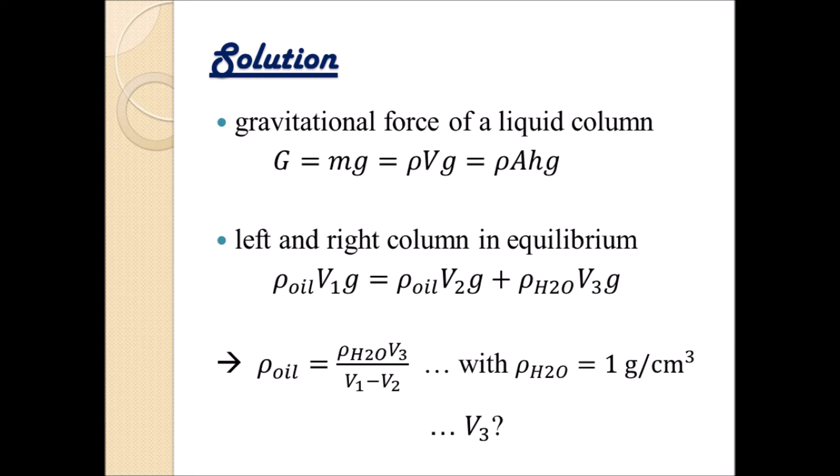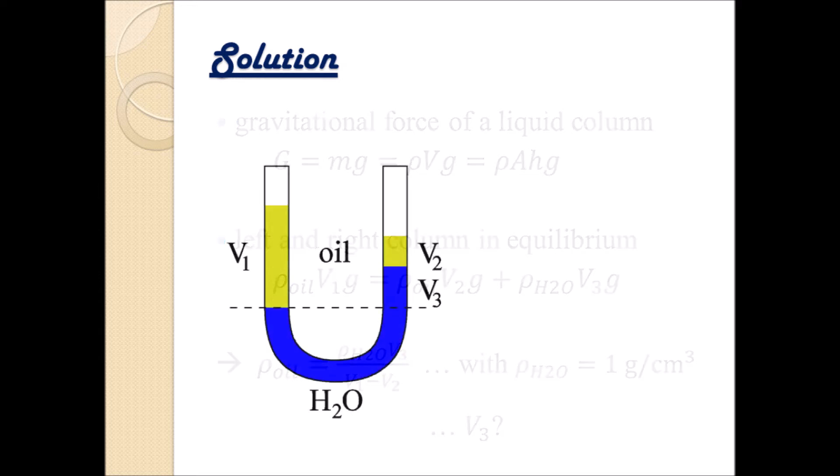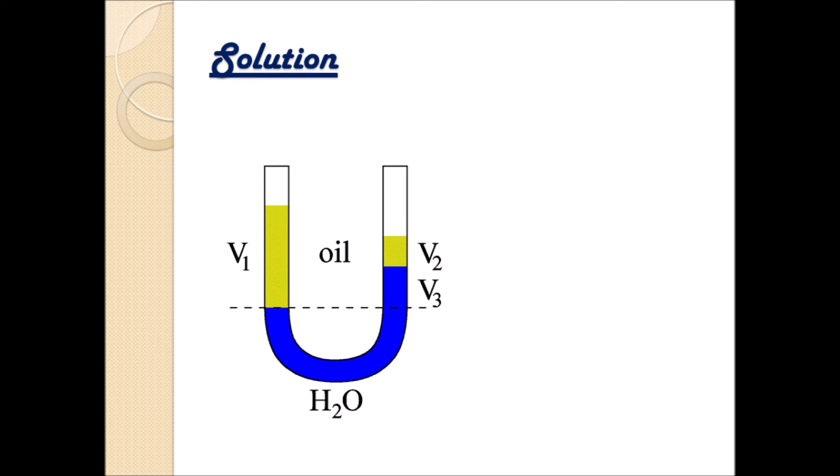Now, where do we get this from? So let's go back to our sketch. And we've seen in this sketch that we can draw such a dashed line where the volume of the water V3 was introduced. But still, how can we calculate it?